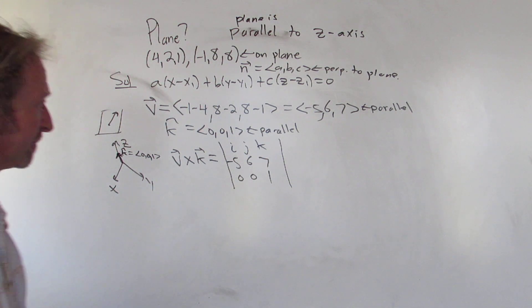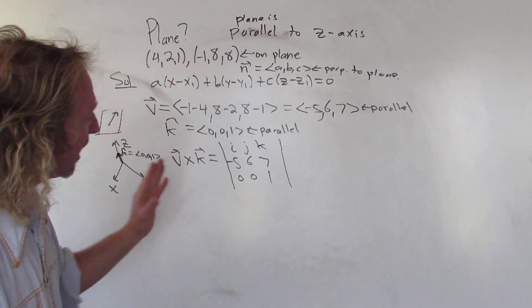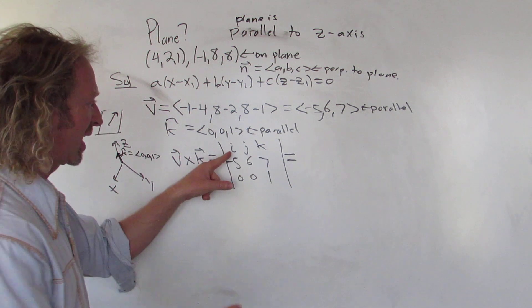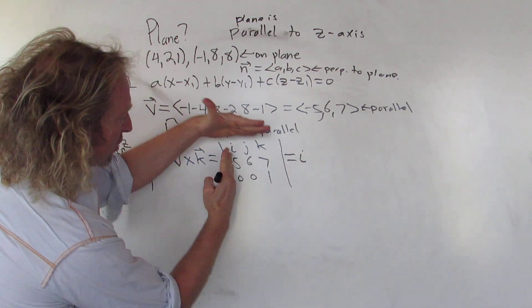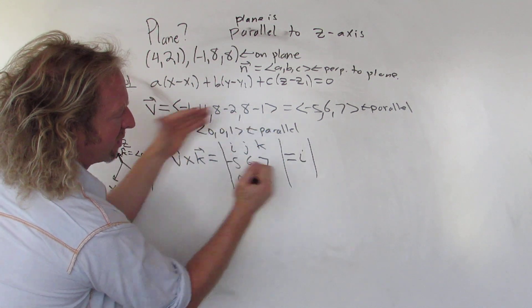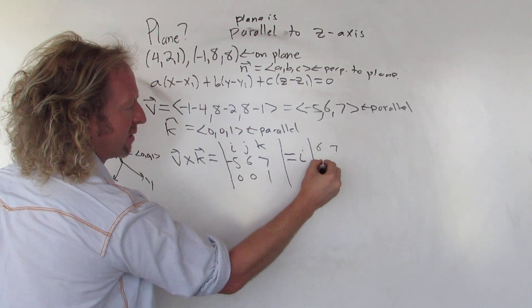So I'll write the v first, because you're supposed to, because it's written first. So negative 5, 6, 7. 0, 0, 1. Okay, so then it's plus minus plus. So it's i-hat. And then you cross these out. You cross out the corresponding row and column. So I'm going to write that down. That's 6, 7, 0, 1. 6, 7, 0, 1.